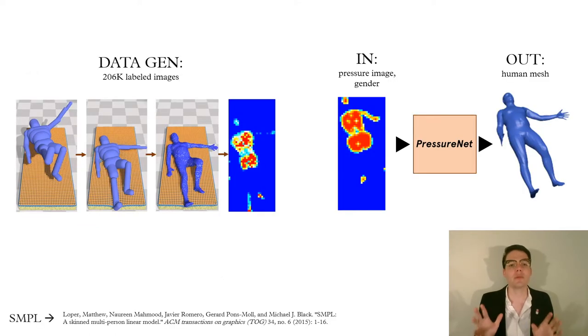Our work has two main steps. First, we generate a large set of synthetic data and then we use that to train a deep network to infer human mesh from a pressure image. We use the SMPL human parametric model to do this.